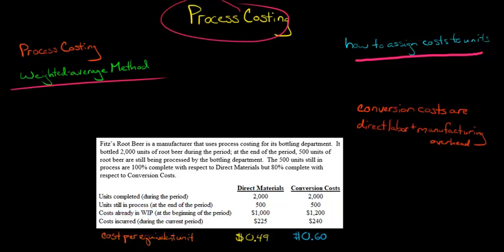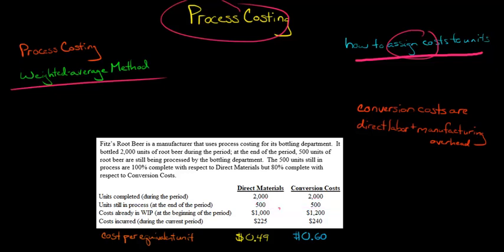How do we assign those costs? If you think about it, there are some units that were completed — we bottled it, did all the labor, all the conversion costs, everything — and those 2,000 have been transferred out of the department. They either went to the next department, or if this was the final department, then they're in finished goods inventory.